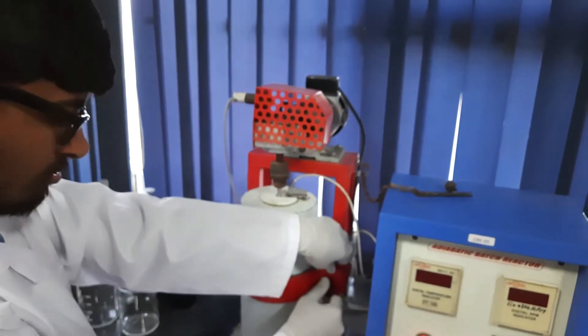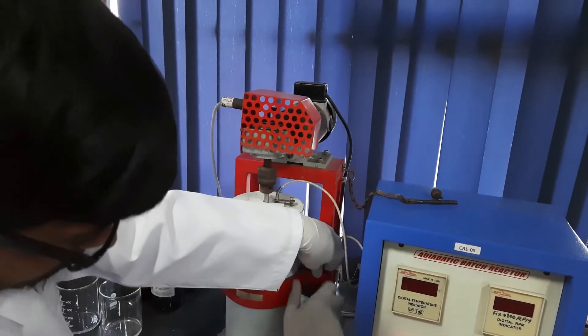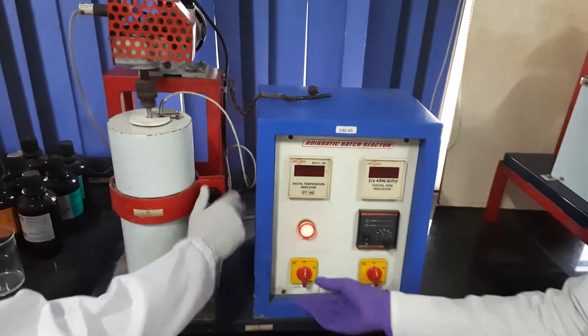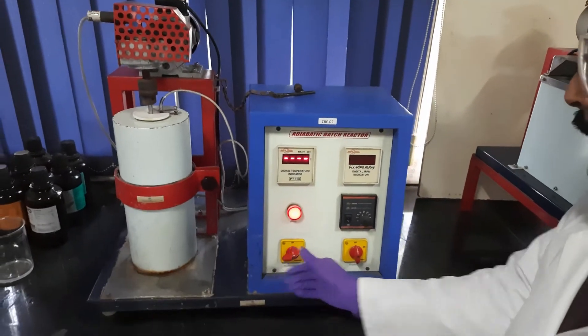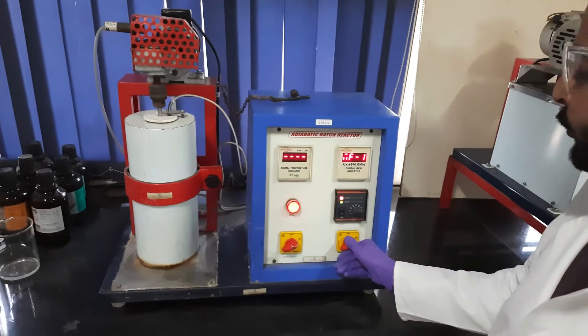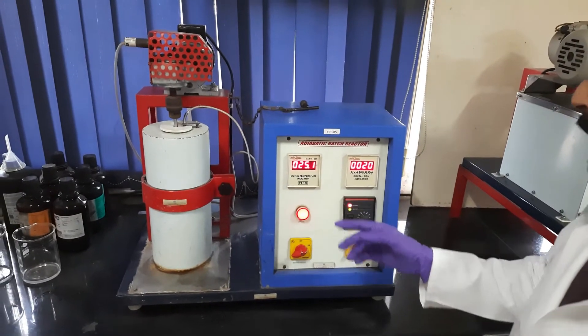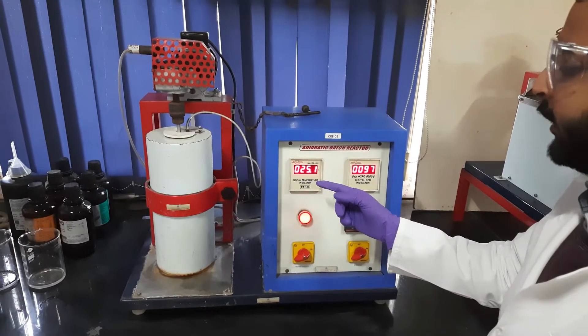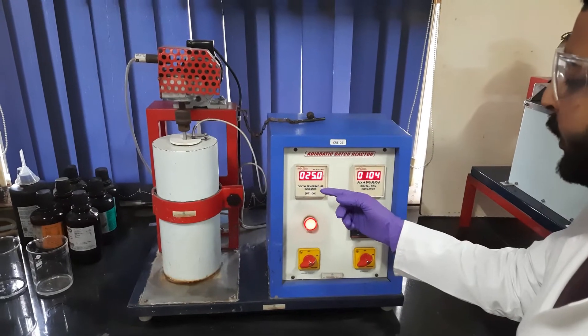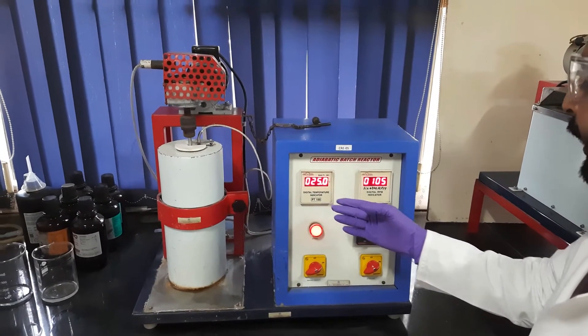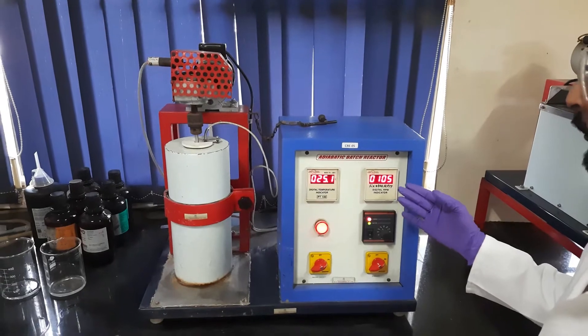We will now set the reaction vessel and move to the operating panel of the reactor and turn on the mains of the equipment and also the stirrer of the equipment. The display will show the digital temperature that is currently being measured inside the reactor and also the RPM which is fixed at 105.